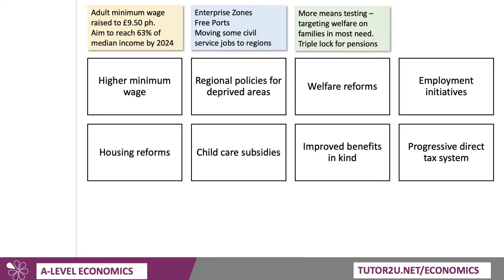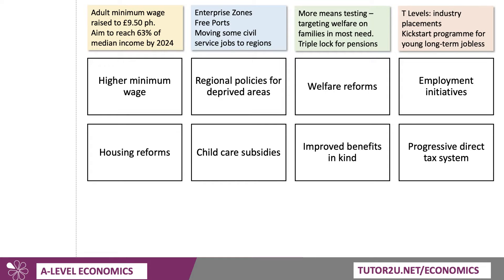Welfare reform is quite important. This government favours more means testing, which means trying to target welfare based on household income — giving more to those who need it most. So moving away from universality, such as the state pension, towards means testing of benefits. For pensioners, pension poverty has actually come down in the last 15–20 years. The government has the triple lock on pensions, which tries to lock in the real and relative value of state pensions. Employment initiatives are also important — getting people into work, reducing long-term unemployment and economic inactivity.